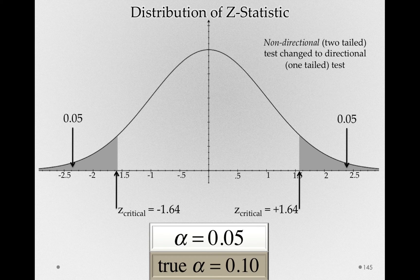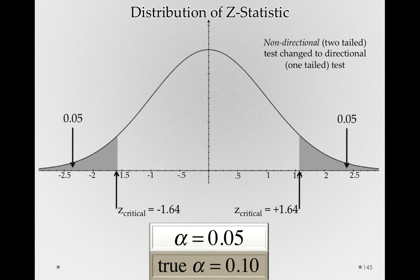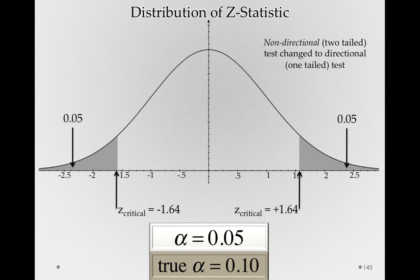Now, this is terrible. This is bad for science because these individuals will state that they performed a one-tailed test and they specified the direction of the effect before they did the study, but in fact they changed their mind. And so, across all researchers, the probability of a false alarm is double what they're stating it to be. Remember, we're trying to protect science, and we want to characterize the likelihood of a false alarm correctly when we're publishing results. We want people to know what standard of evidence our result actually achieved, not the one that happened after we opportunistically changed our hypothesis.